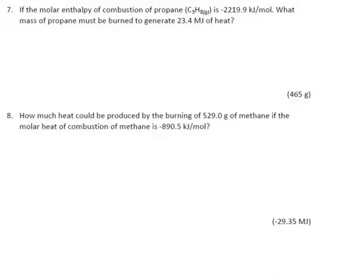We're burning propane, and we don't need to write a reaction for this one because they've already given us the big number we need. They've given us a delta H, and they've already done any division that had to happen because this isn't just kilojoules — it's kilojoules per mole. Our delta H is 2,219.2 kilojoules, and it's the enthalpy of combustion for propane, so we know it's per mole of propane.